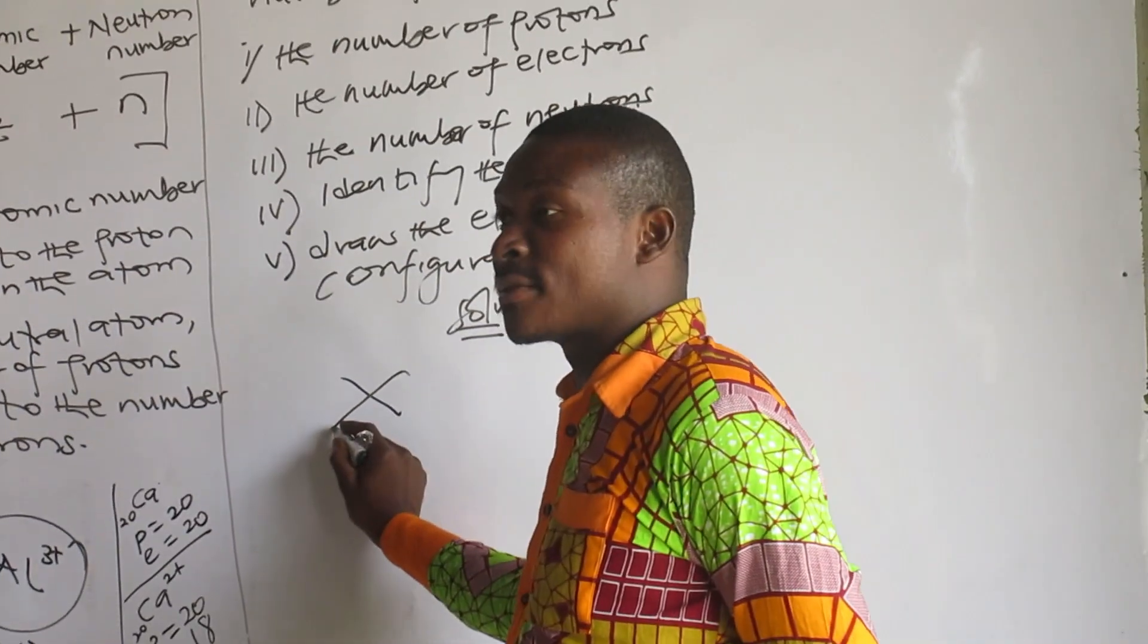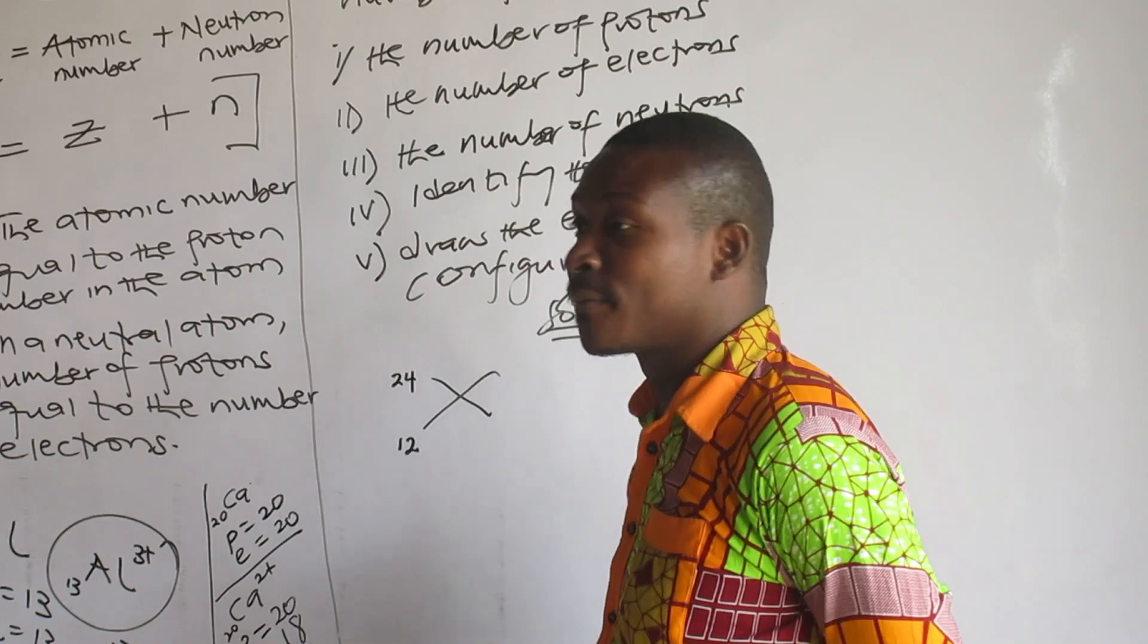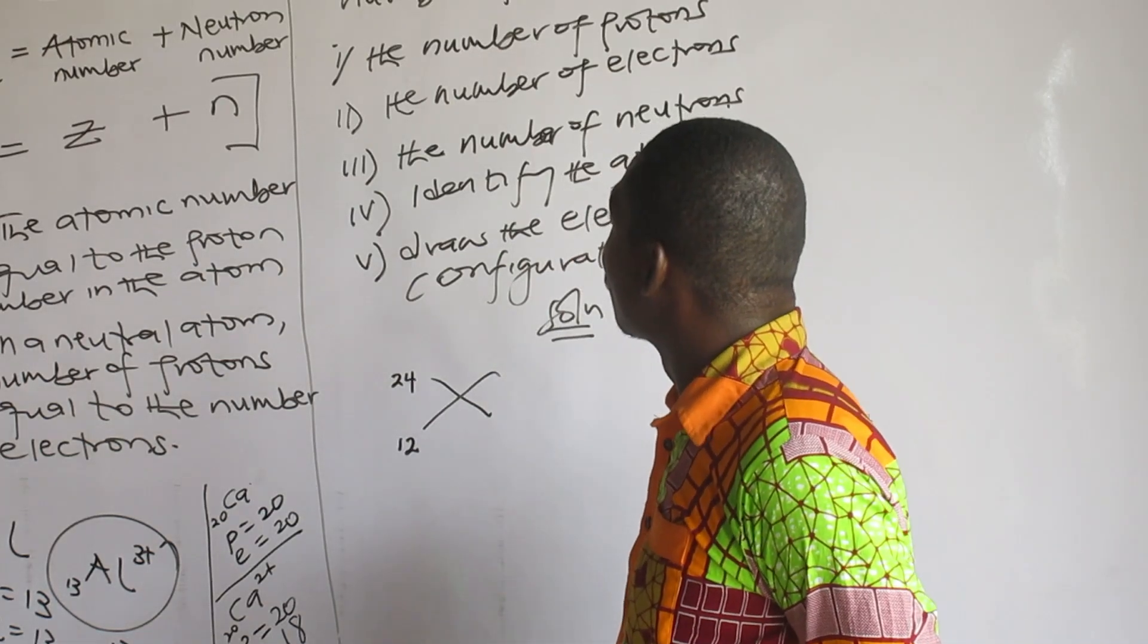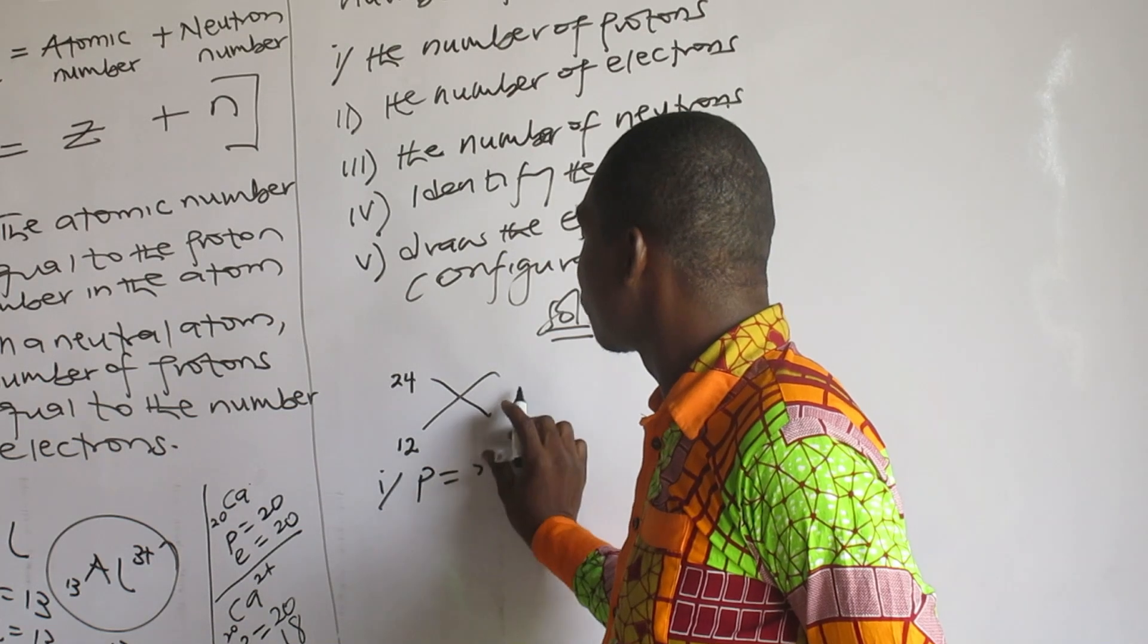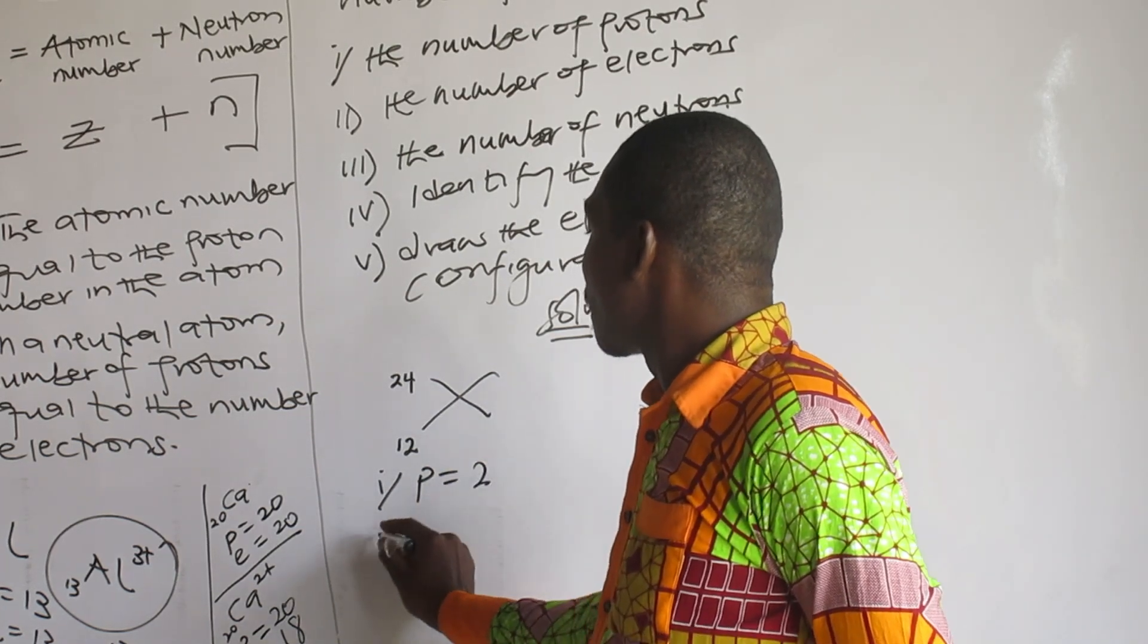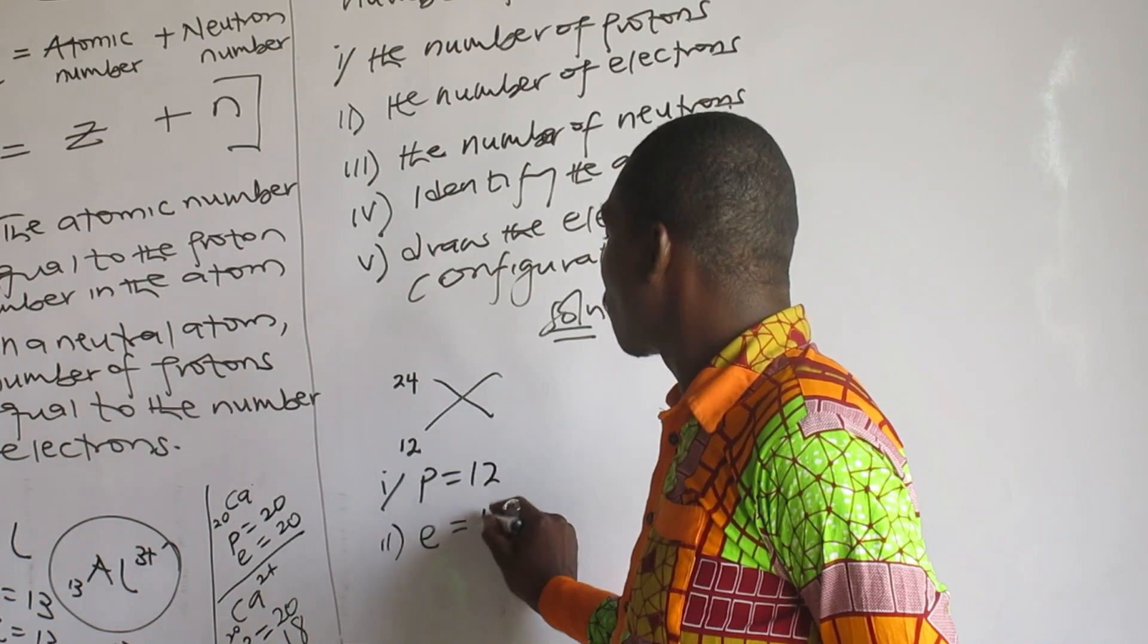This is element X. Atomic number is always here, mass number is here. Now, the number of protons: proton is 12. Number of electrons: electron is also 12.